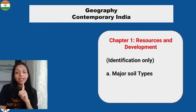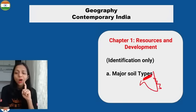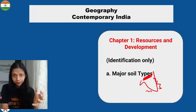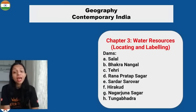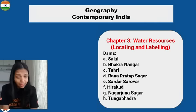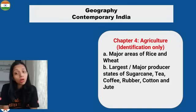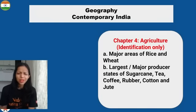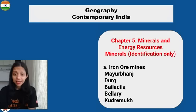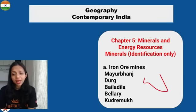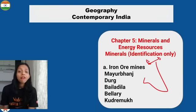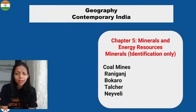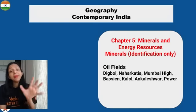For Resources and Development, there will be identification — you will identify which soil is available in a shaded area. In Water Resources, all the dams will come: Salal Dam, Bhakra Nangal Dam, Tehri Dam, Rana Pratap Sagar Dam, Sardar Sarovar, Hirakud, Nagarjuna Sagar, and Tungabhadra. In Agriculture, just identification — you will shade an area and say which crop is most important in that state. In Mineral and Energy Resources, you identify things like in Assam it could be Digboi — so coal mines and oil fields will be for identification, not locating, which makes it much easier.